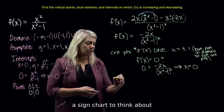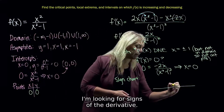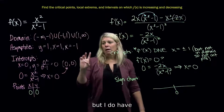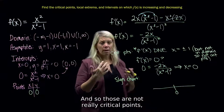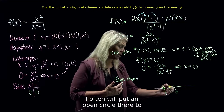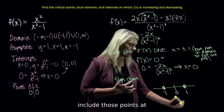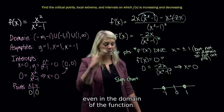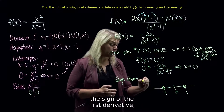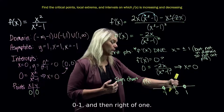At that point I'm ready to do a sign chart to think about where the function is increasing and decreasing, looking for signs of the derivative. This is another place where the domain of the function is important. I really only have one critical point, but I do have some places where the function is undefined. Those are not really critical points, but they are places where the derivative might change sign. On this number line I'll put an open circle at 1 and negative 1 to remind myself that my intervals should not include those points. I'm looking at signs in four different intervals: left of negative 1, between negative 1 and 0, between 0 and 1, and right of 1.